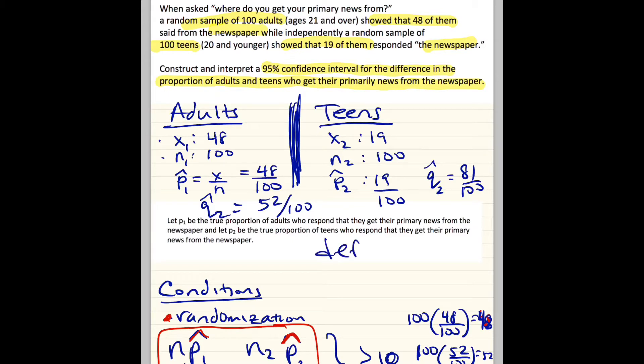Remember to define your parameters. Even for a confidence interval, you should define your parameters. So let P1 be the true proportion of adults who respond that they get their primary news from the newspaper, and then let P2 be the teens. Just be very specific. It's a proportion.